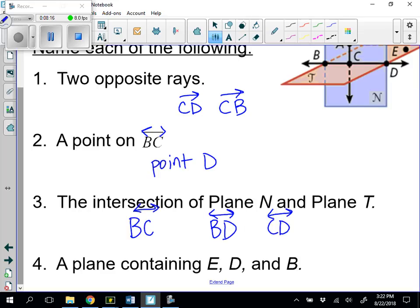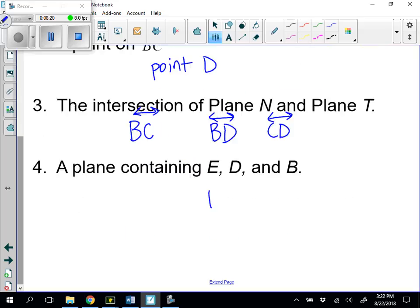And then finally, name a plane that contains E, D, and B. So the only plane that contains those would be plane T.